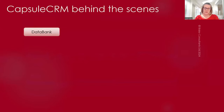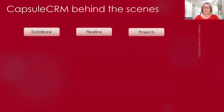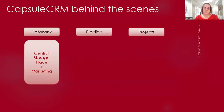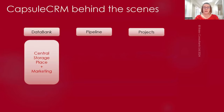There are three main areas. The first is the data bank, the second is the pipeline, and the third is projects. In the data bank we have the central storage place — it's where we do our marketing from, where we keep on top of groups of contacts, and where we can dice and slice different groups. We might have people we've met networking, our associates, partners, potential clients, actual clients, and previous clients. Every single person and organization on the system is in the data bank.